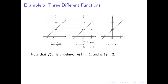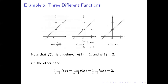So we have three different functions: f of 1 is undefined, g of 1 equals 1, and h of 1 equals 2 — they disagree about what happens at x equals 1. But the limits of all three as x approaches 1 are the same: they're all equal to 2. If we stand anywhere on any of those graphs other than where x equals 1 and move closer to x equals 1, our y-coordinates get closer and closer to 2. What matters is what's happening as we approach x equals 1, and in all three cases the answer is 2.